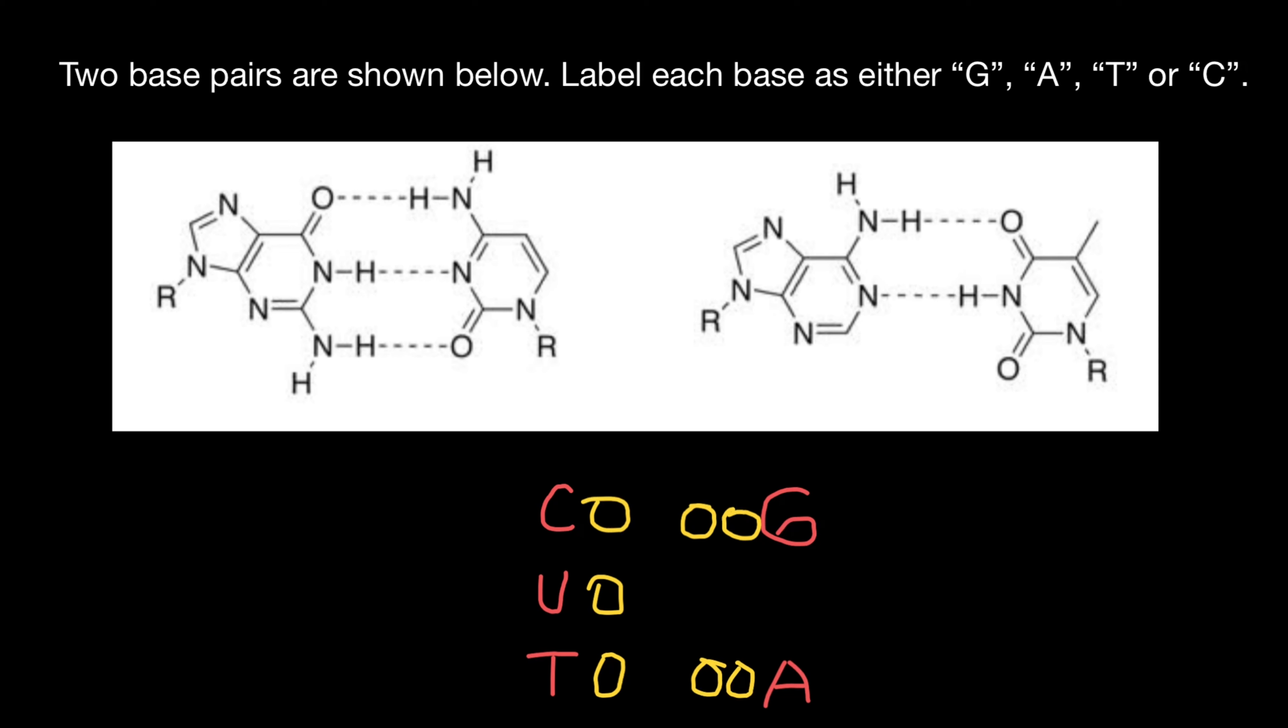So cytosine and guanine are connected by triple bond and thymine and adenine are connected by double bond. So now we can say that cytosine has one ring and guanine has two rings and they have triple bond between them.